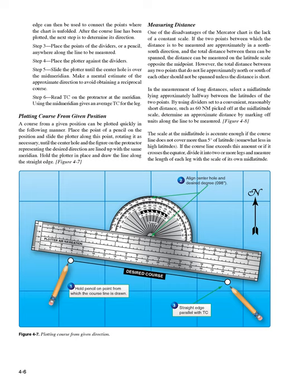After the course line has been plotted, the next step is to determine its direction. Step 3: Place the points of the dividers or a pencil anywhere along the line to be measured. Step 4: Place the plotter against the dividers. Step 5: Slide the plotter until the center hole is over the mid-meridian. Make a mental estimate of the approximate direction to avoid obtaining a reciprocal course. Step 6: Read TC on the protractor at the meridian. Using the mid-meridian gives an average TC for the leg.